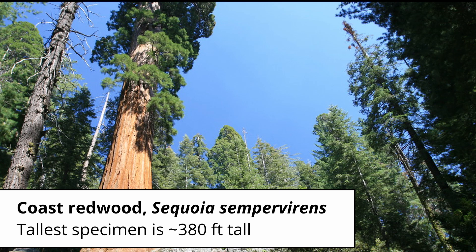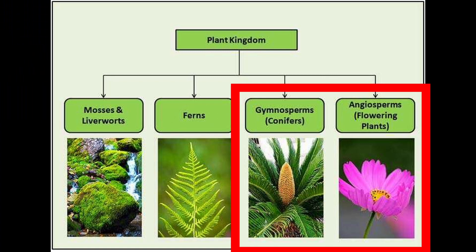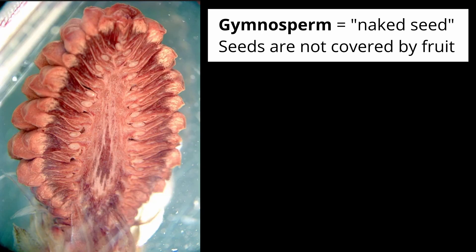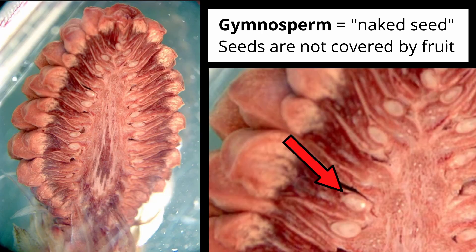Some of these vascular systems are so sophisticated that you can have huge trees — trees can get over 300 feet tall. It's pretty amazing. Two major groups of vascular plants are the gymnosperms and the angiosperms. The gymnosperms came first.